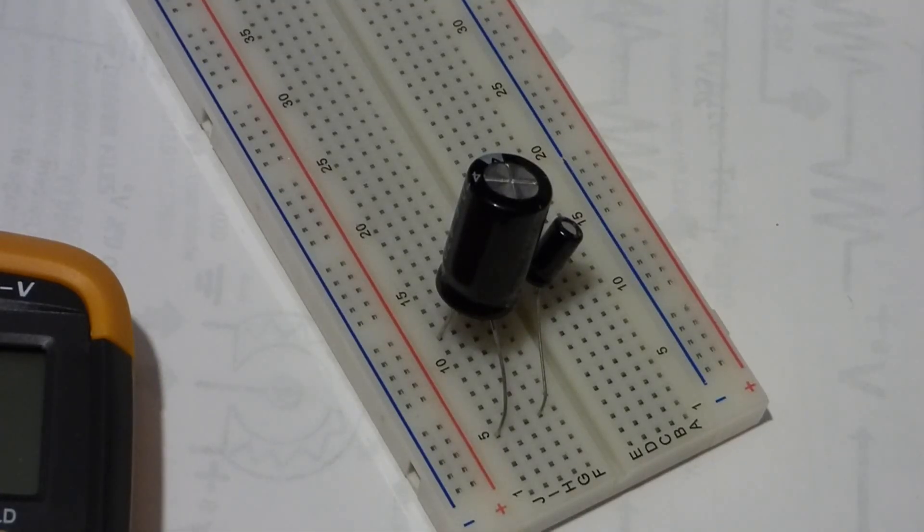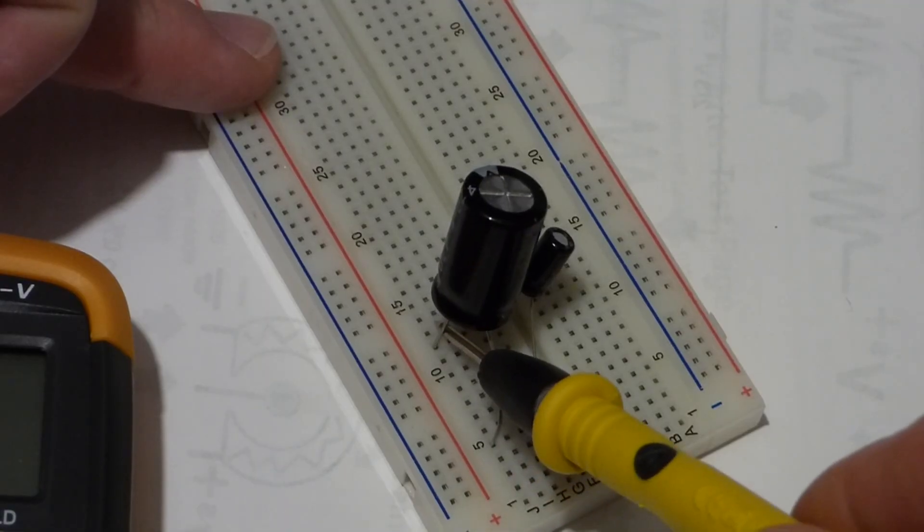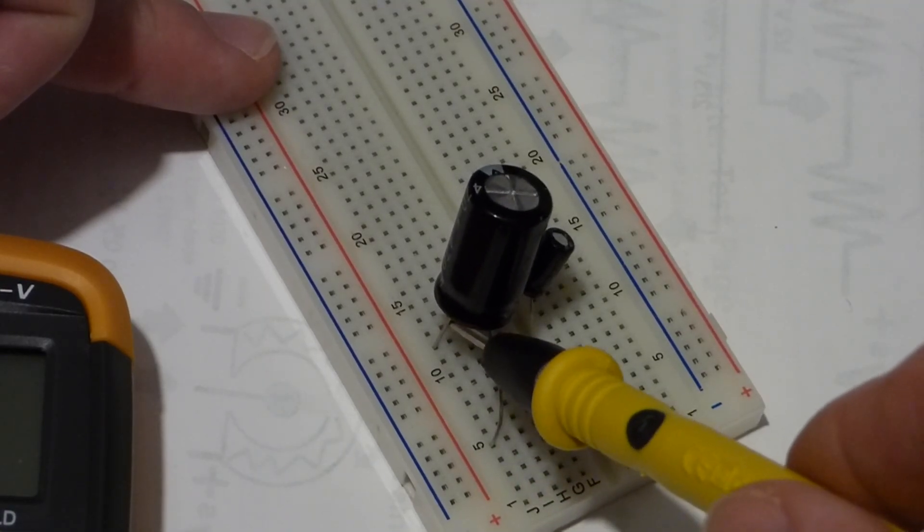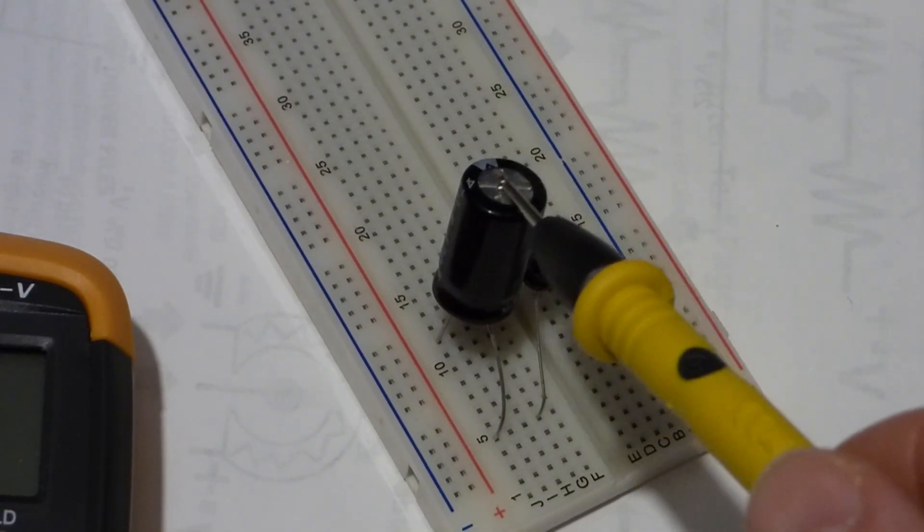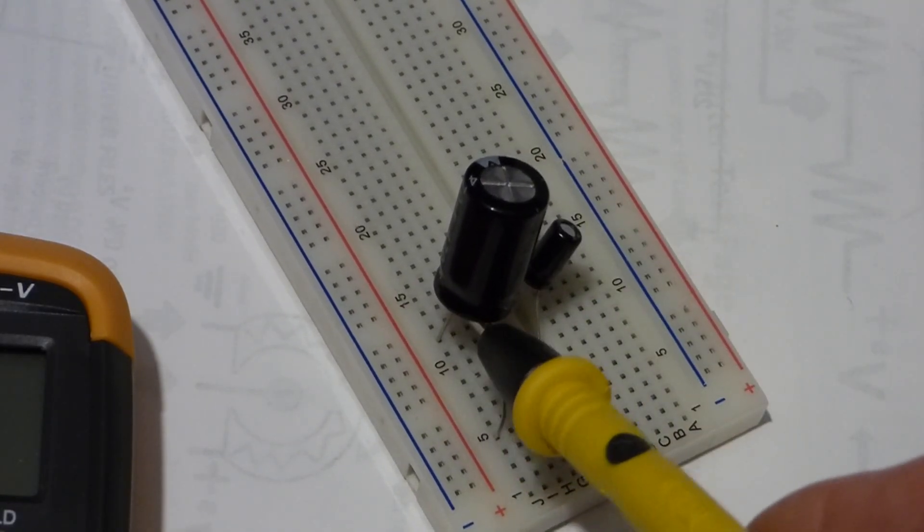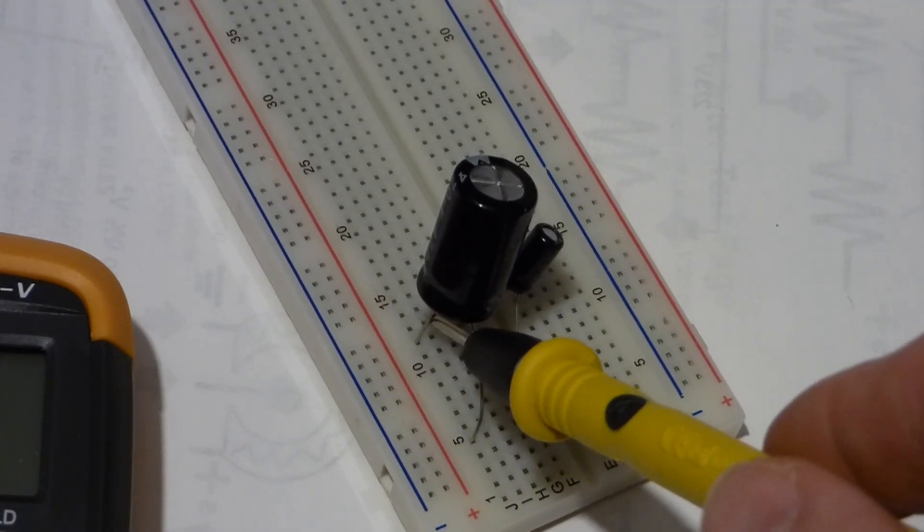We're going to be measuring capacitance again. And so we don't want a voltage on the capacitors. So using this probe, I'm just going to short circuit the capacitor. Now again, you only want to do this with these small value capacitors. Even this small might not be good for it. But that'll short circuit it and drain it.